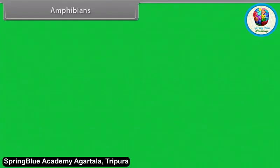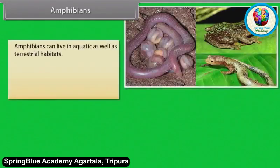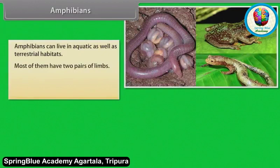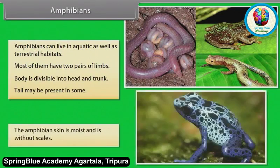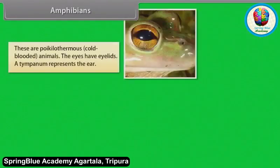Amphibians can live in aquatic as well as terrestrial habitats. Most of them have two pairs of limbs. Body is divisible into head and trunk. Tail may be present in some. The amphibian skin is moist and is without scales. These are poikilothermous — that is, cold-blooded animals. The eyes have eyelids.